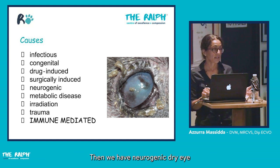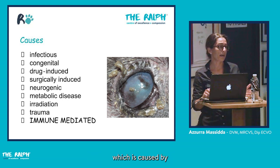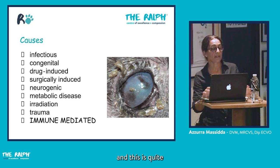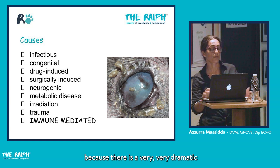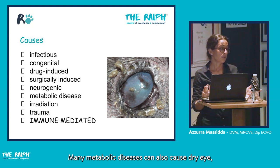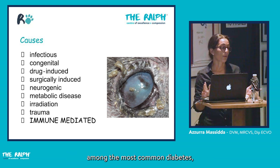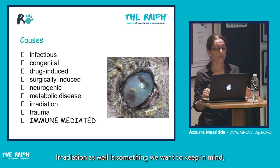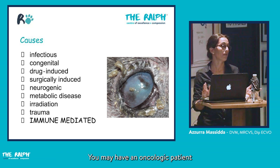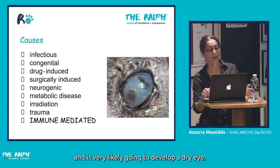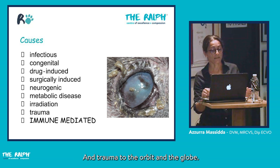Neurogenic dry eye is caused by a problem in the parasympathetic innervation to the lacrimal gland. It has a very characteristic and dramatic presentation, with a very sudden reduction in tear production. Metabolic diseases such as diabetes, hypothyroidism, and Cushing's disease can also cause dry eye. Irradiation is also worth keeping in mind — oncologic patients referred for head radiotherapy are very likely to develop dry eye.